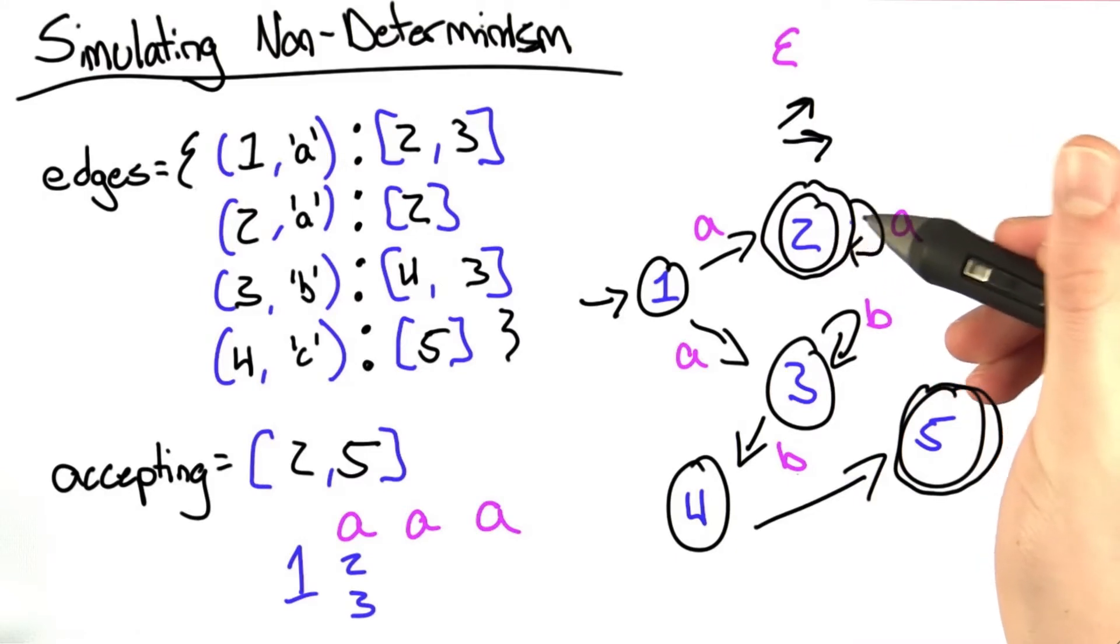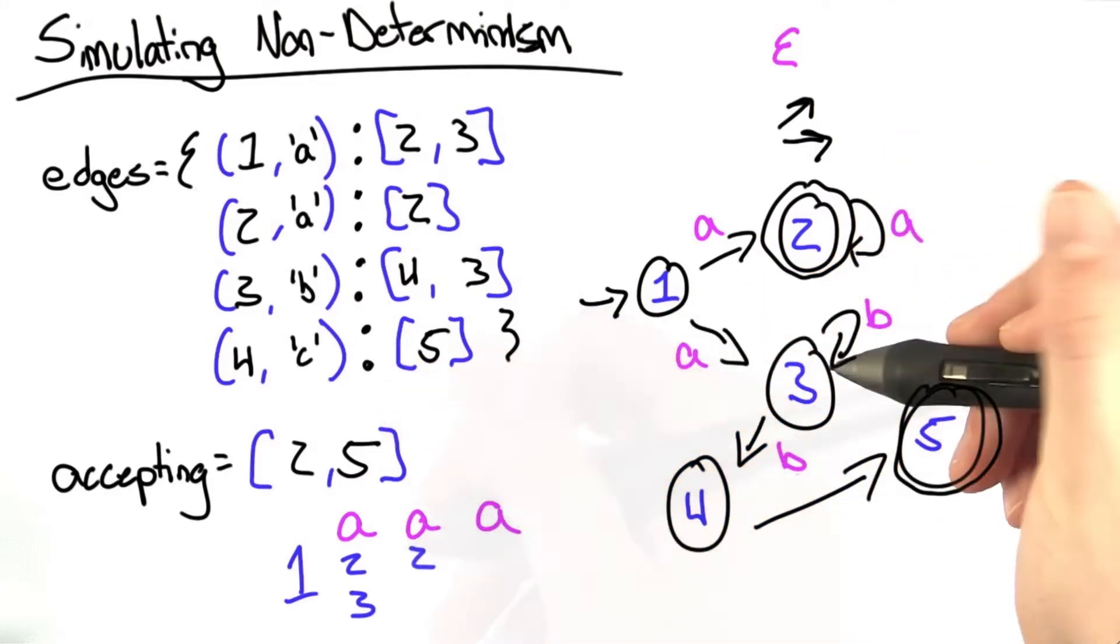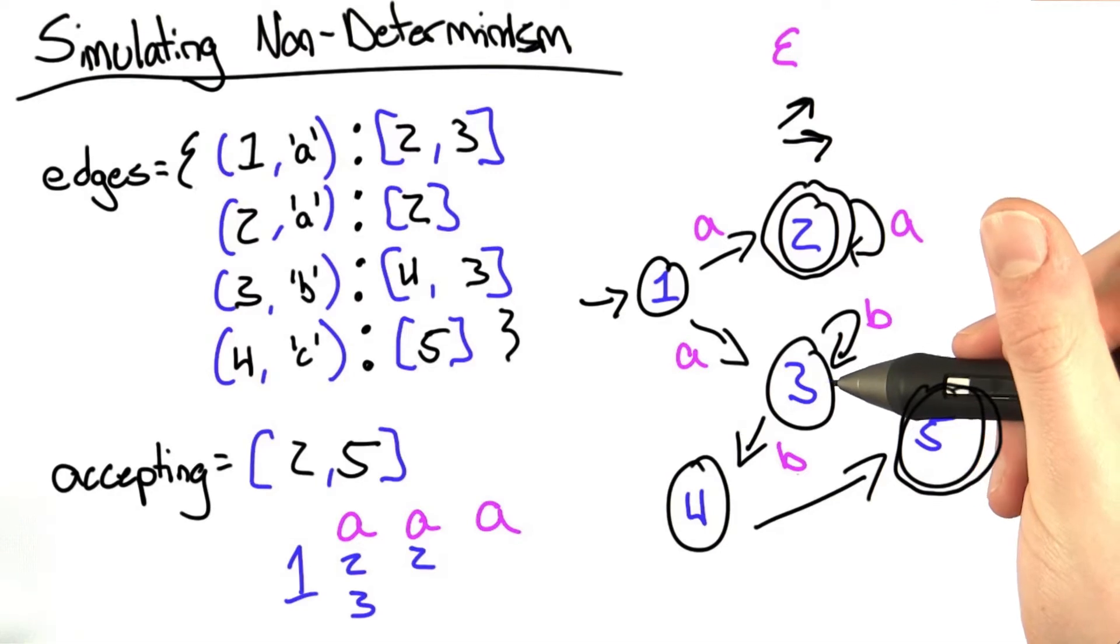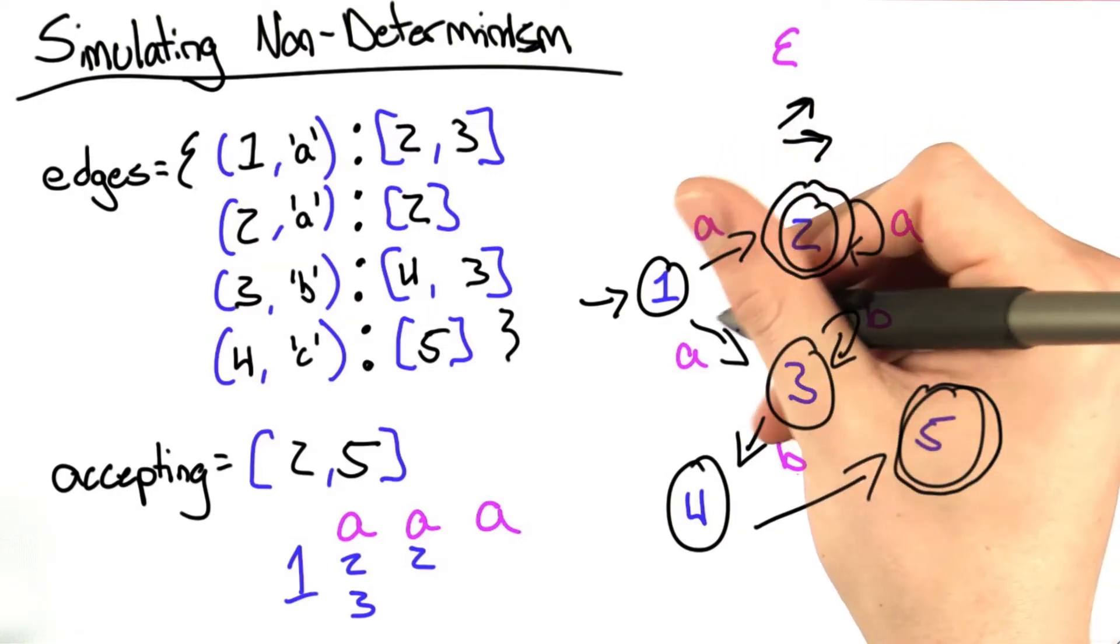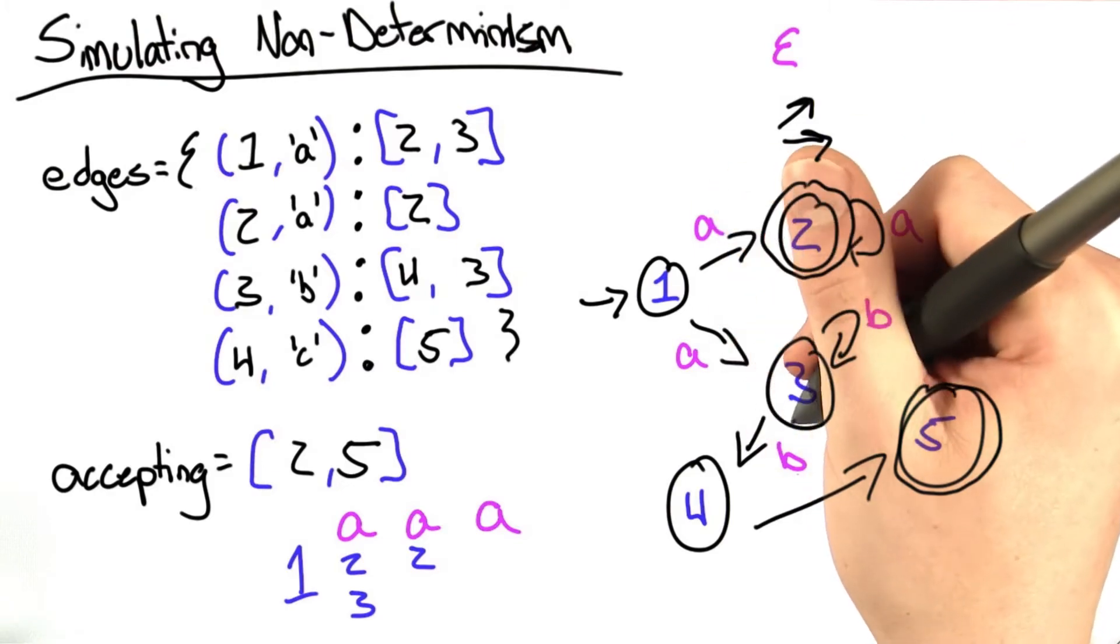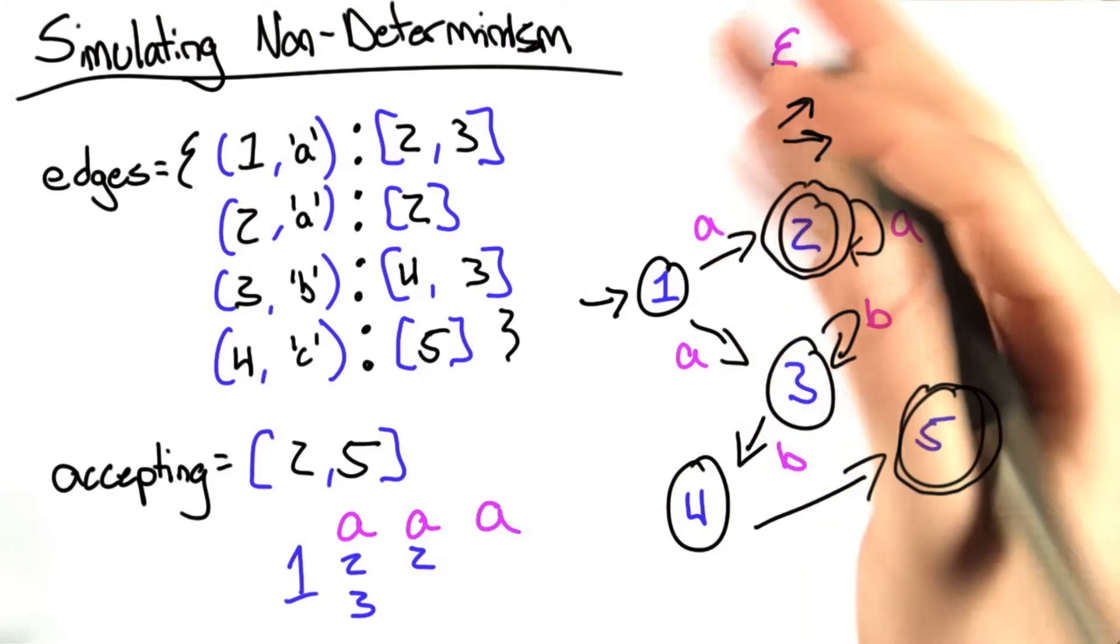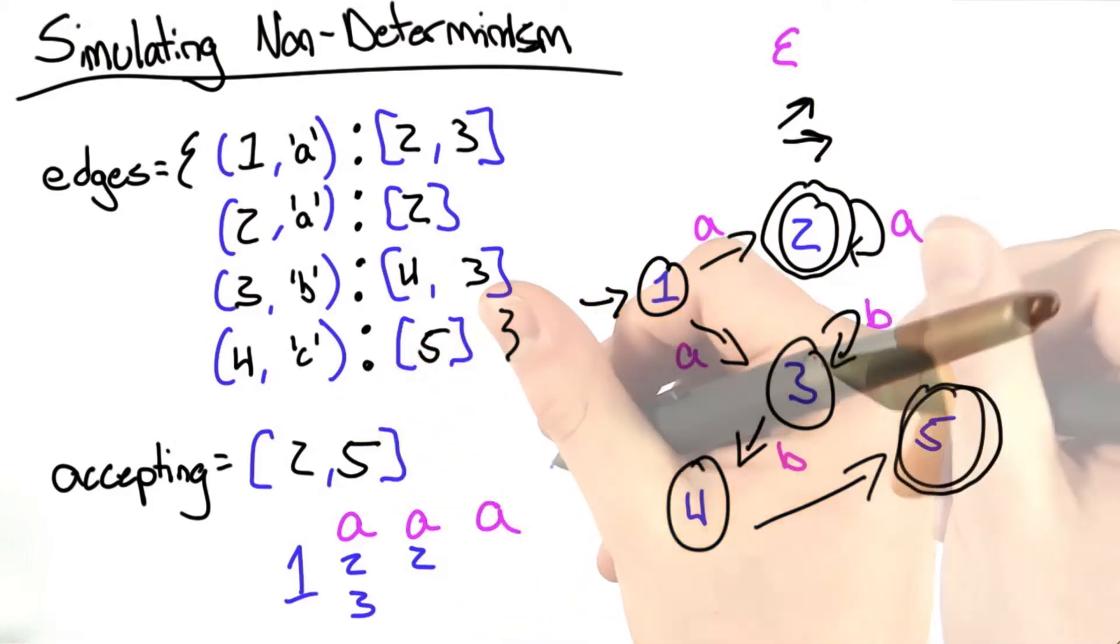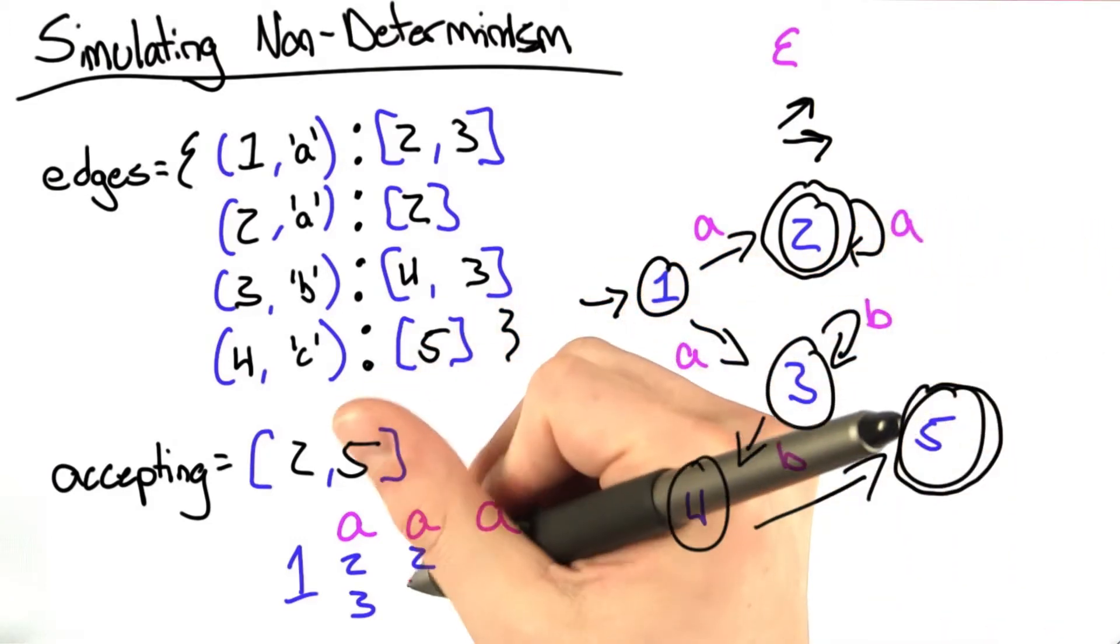At 2, we take the letter A back to 2. At 3, there are no transitions for the letter A. So in this version of our simulation, this alternative dimension, however you want to think about it, the finite state machine has failed to accept the string.